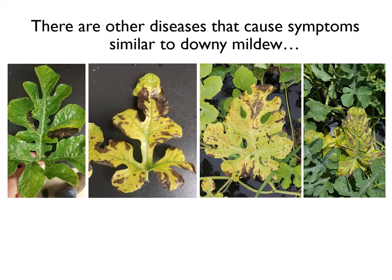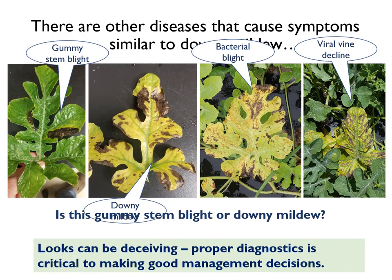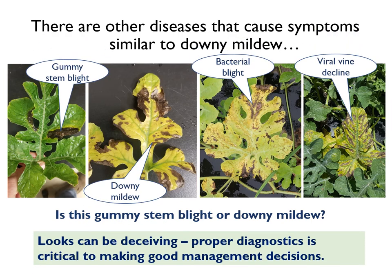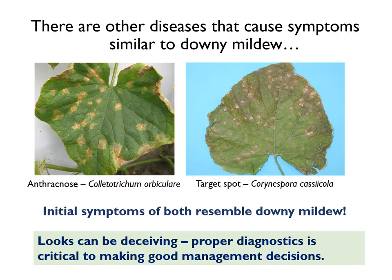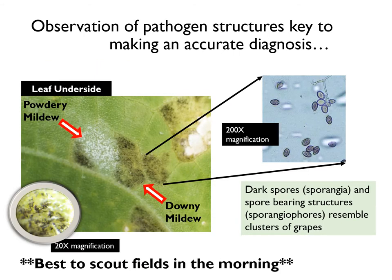However, you need to be careful not to make the diagnosis based on only symptoms. Is this gummy stem blight or downy mildew? As you can see, looks can be deceiving — and not just for watermelon. Even on cucumber, there are fungal diseases that can be mistaken for downy mildew. That's why it is important to check lesions for the distinct sporangia and sporangiophores that are characteristic of P. cubensis.